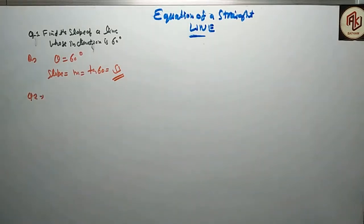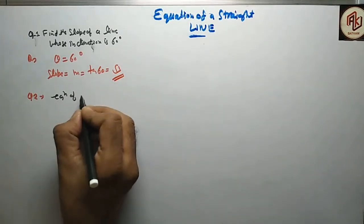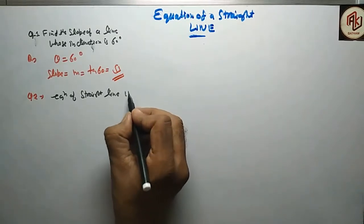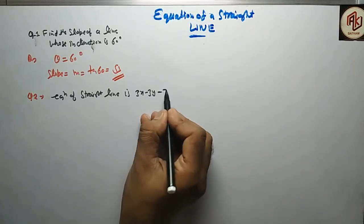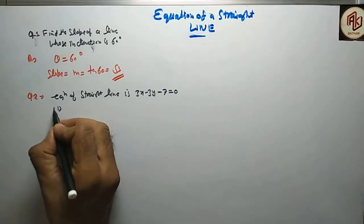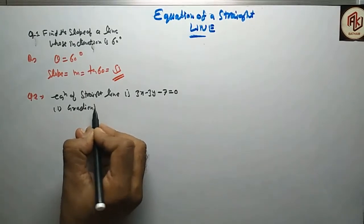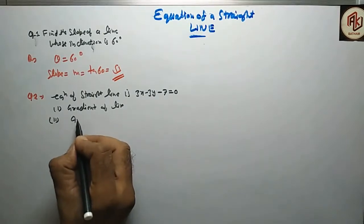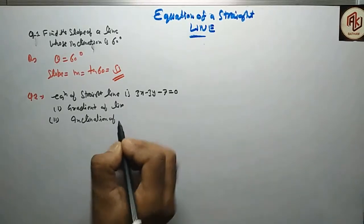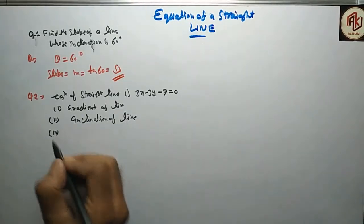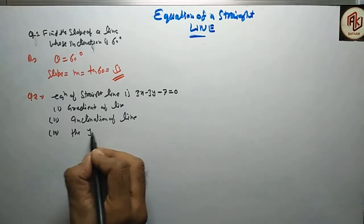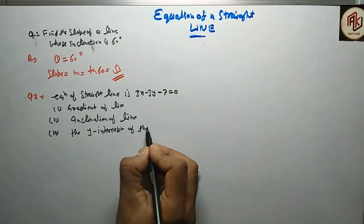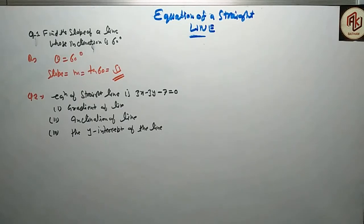The next question gives the equation of a straight line: 3x minus 3y minus 7 equals 0. We need to find three things: first, the gradient of the line; second, the inclination of the line; and third, the y-intercept of the line.